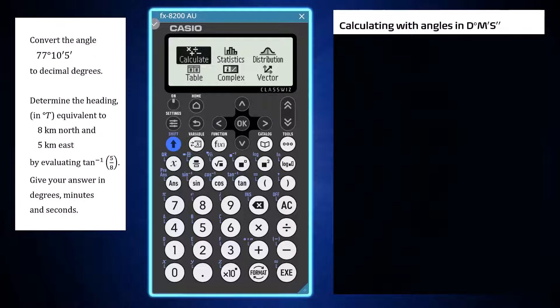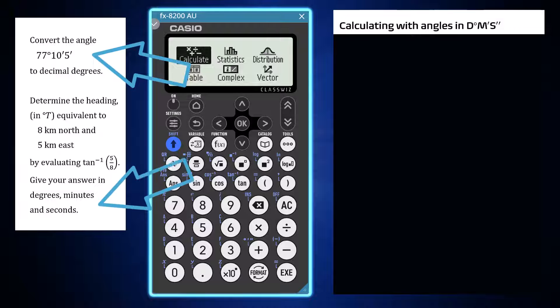Using the Calculate app of a Casio FX 8200 AU, angles and angle results can be converted to and from decimal degrees and sexagesimal degrees minutes and seconds format.